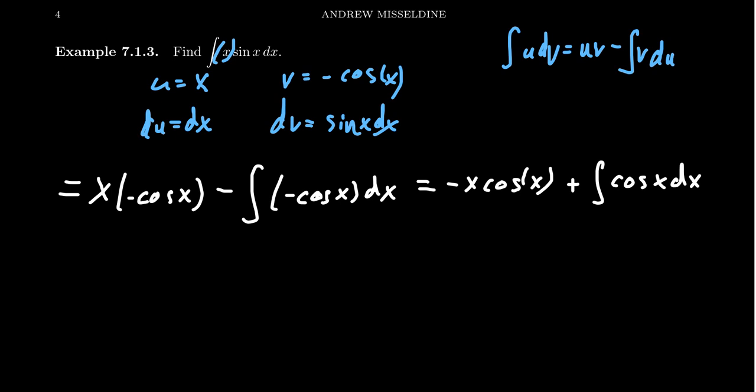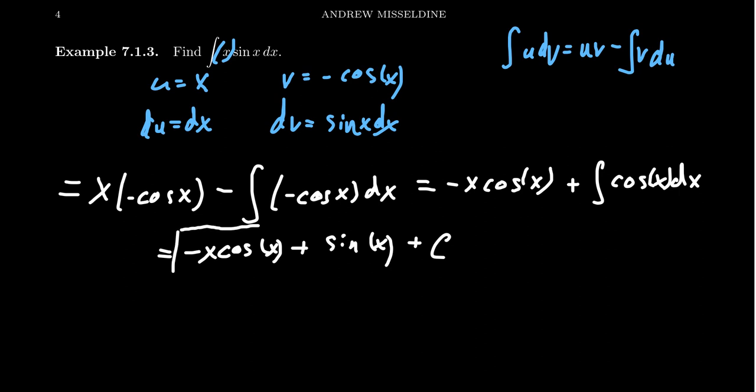Looking at the last principle: are we in a better situation than before? Can we find the anti-derivative of cosine? Yes — the anti-derivative of cosine is sine. So taking the anti-derivative there, we get negative x cosine of x plus sine of x plus a constant. Note it's a positive sine because we're taking the anti-derivative of cosine, not the derivative. We chose u and dv to make the integral simpler, and the new integral was something we could calculate.